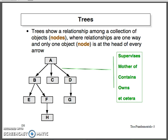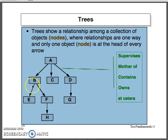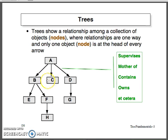A tree is used to show a relationship among a collection of objects, which we call nodes. The relationship may be one-way, with one object at the head of every arrow. Here A is an object which is having a relationship with B, C, and D. You can see B, C, and D all lying at the same level. So A is the one that supervises all the remaining elements.